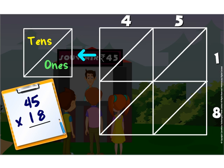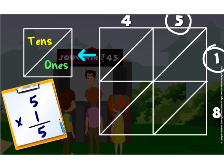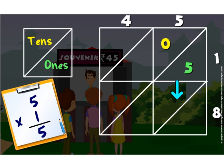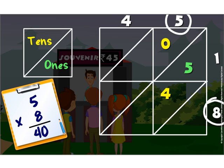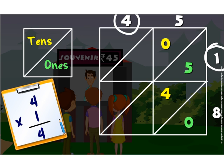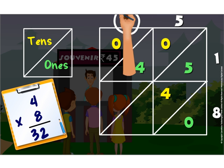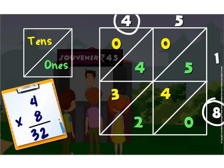We start by multiplying two numbers which match up for a box. Here, 5 into 1 is 5. We write 5 in the ones position and 0 in the tens position. We now move to the next square and multiply 5 and 8. 5 into 8 is 40. We write 4 in the tens position and 0 in the ones position. Moving to the next square, 4 into 1 is 4. We write 4 in the ones position and 0 in the tens position. Moving to the last square, 4 into 8 is 32. We write 3 in the tens position and 2 in the ones position.